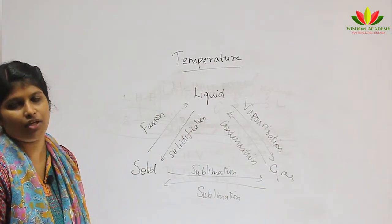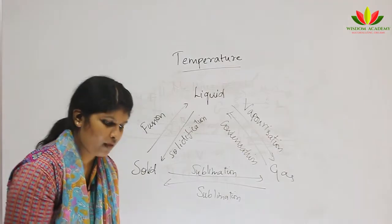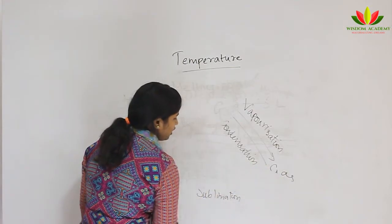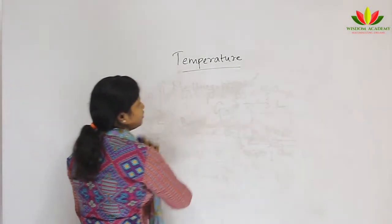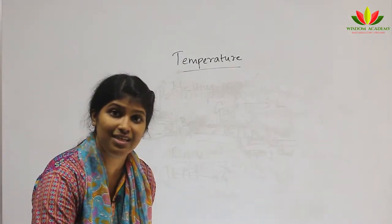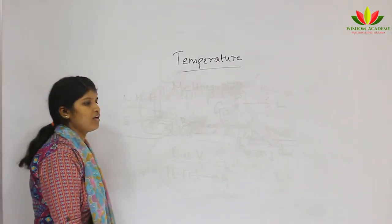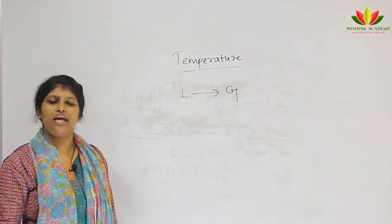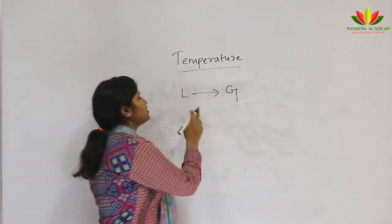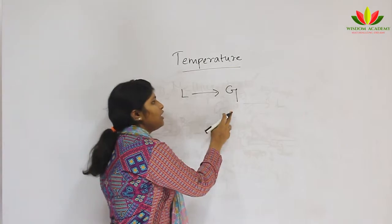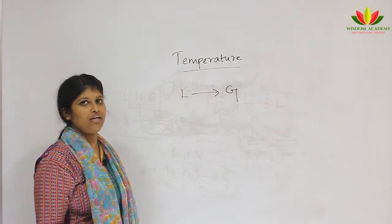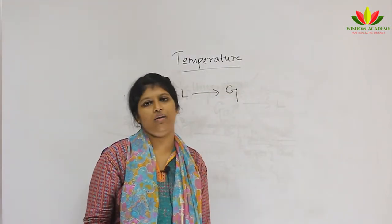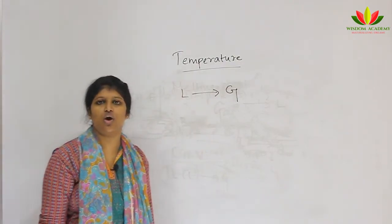Our last topic is evaporation. There is a difference between evaporation and boiling point. Boiling point is the temperature at which liquid is converted into gas at atmospheric pressure. Evaporation is a phenomenon in which liquid is converted to gas below its boiling point — the key condition is that it must occur below the boiling point of the liquid.